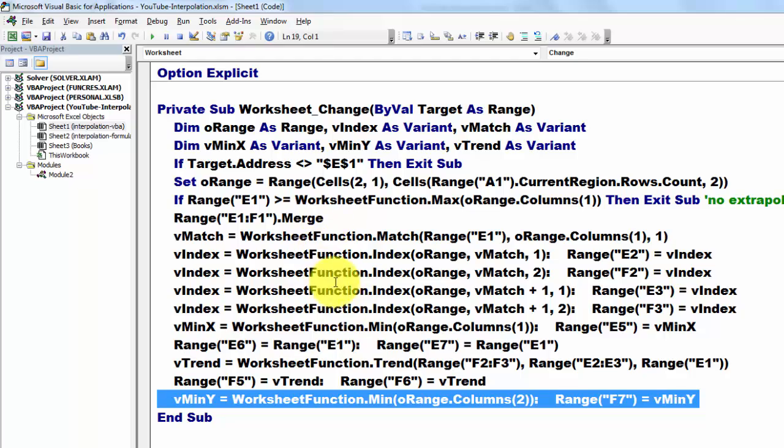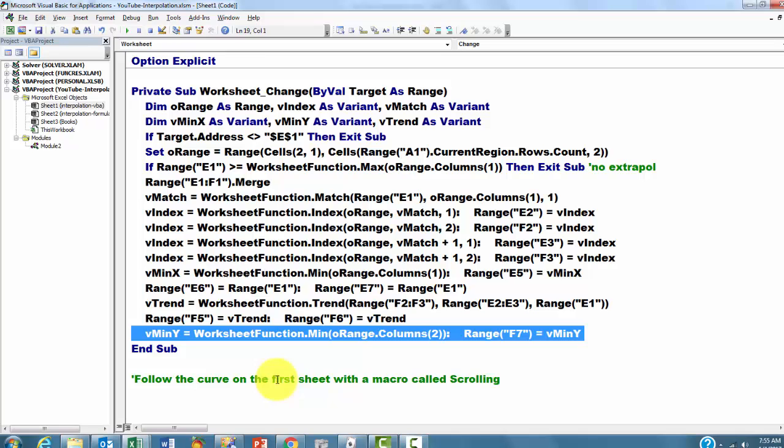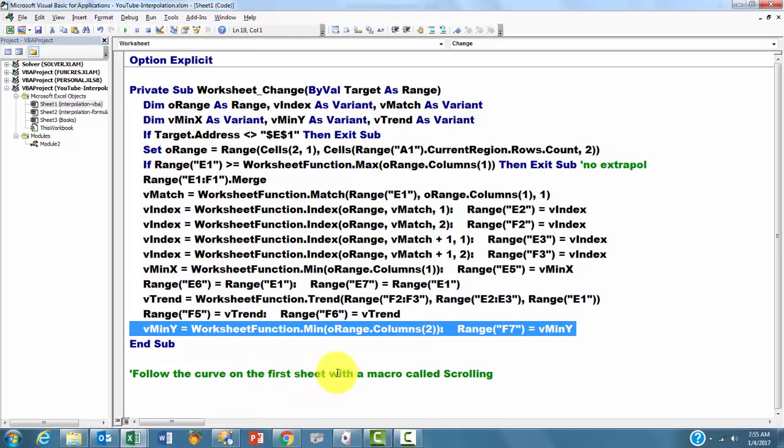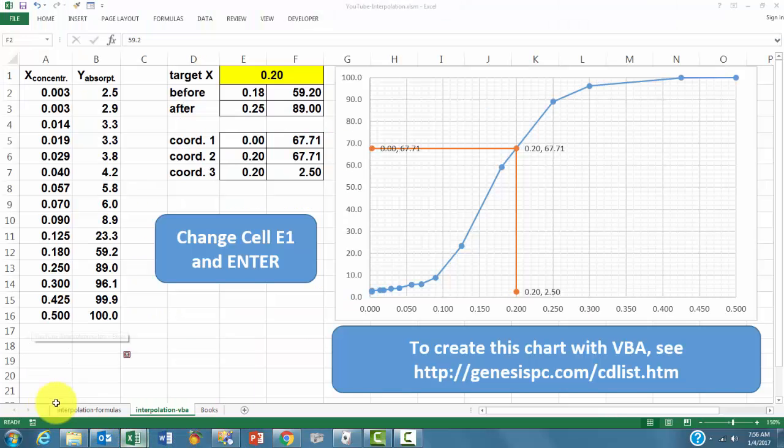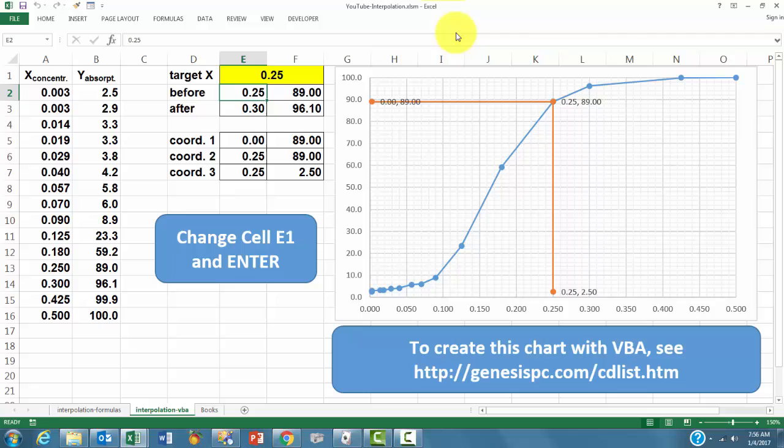I will just run this one to show you that it works. Then we are going to follow the curve. I am going to the second sheet, and each time I change something in here, let's say 0.25, it will go to 0.25. By just changing the value, the change event kicks in at the moment I enter.